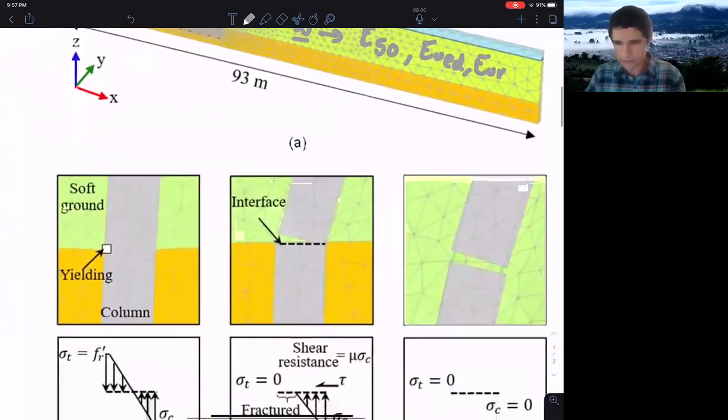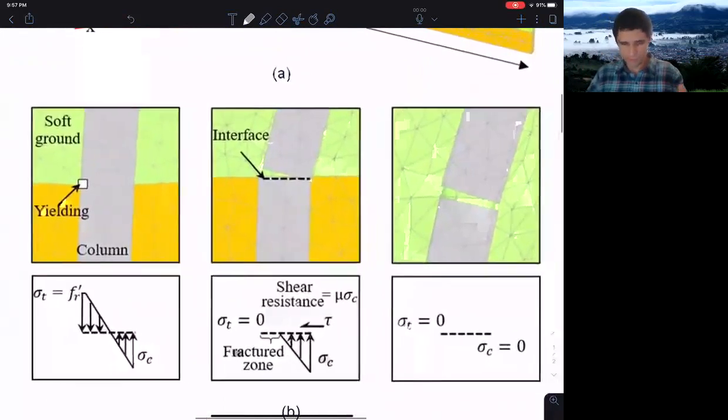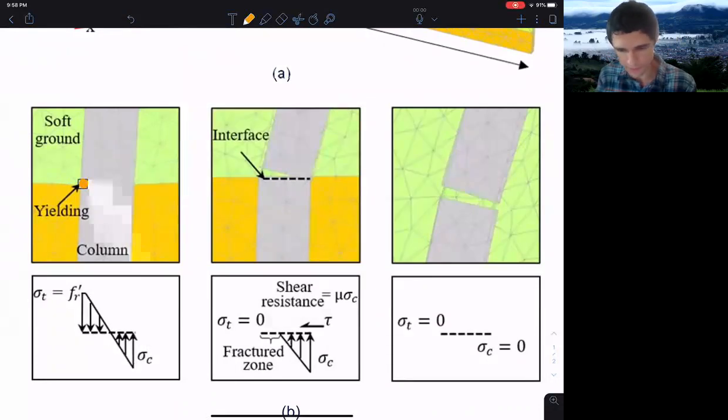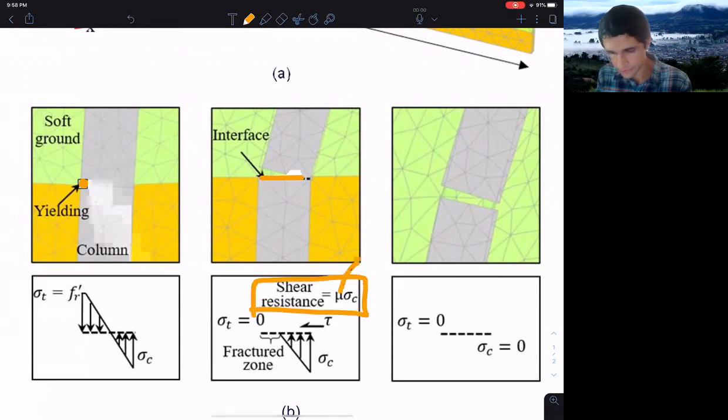The other part is the 3D finite element parametric analysis. Another part to consider is the interface. The fracture was modeled using an interface, and after we found that one point had yielded and reached the yielding stress of the concrete, we defined an interface. This interface is a function of a Mohr-Coulomb model, in which mu represents the friction angle, and we found friction angles for concrete-to-concrete materials.